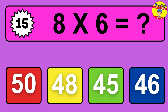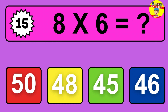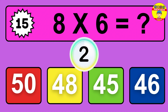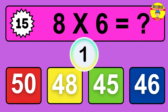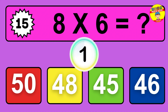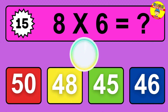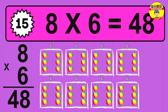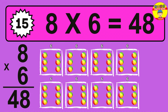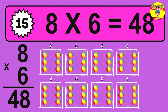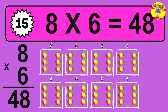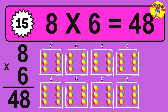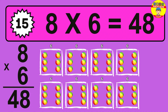Question 15. 8 times 6 equals what? The answer is 8 times 6 is 48. To calculate, we have 8 groups with 6 balls each one. So, how many balls do we have? 48 balls.